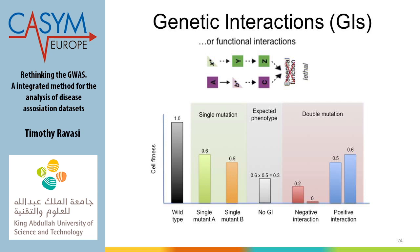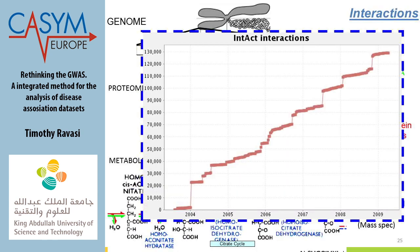Just to show I'm not the only one who thinks interactions are important: this is the IntAct interaction database. You can see how exponentially the number of datasets of any type of interaction has grown as people deposit data in this database. This shows that interactions between components are critically important, and measuring, studying, and modeling them is something we must go further on.